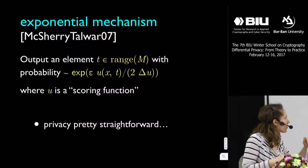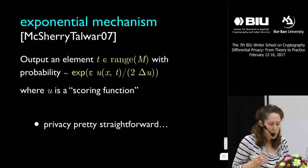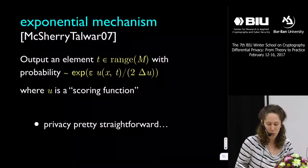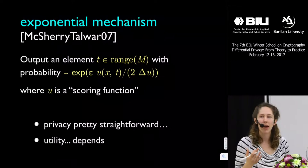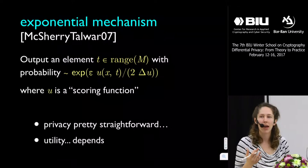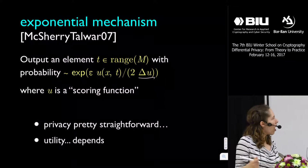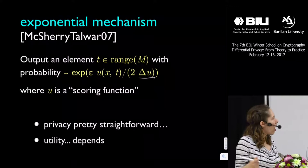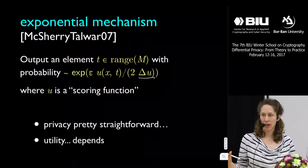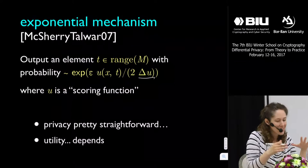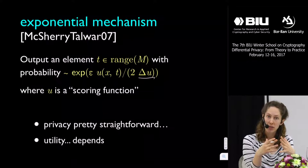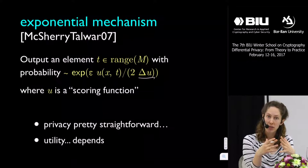Not surprisingly, given that we've seen something quite like this before, the privacy proof is going to be pretty straightforward. What's going to be a little less obvious, as we instantiate this in various situations, is what the accuracy theorem will say. No matter how I set my scoring function, because of the dependence on sensitivity, I always get privacy. Whether I get a good accuracy theorem depends on whether I've picked a smart scoring function and whether it can concentrate enough probability mass around good outcomes versus bad outcomes.